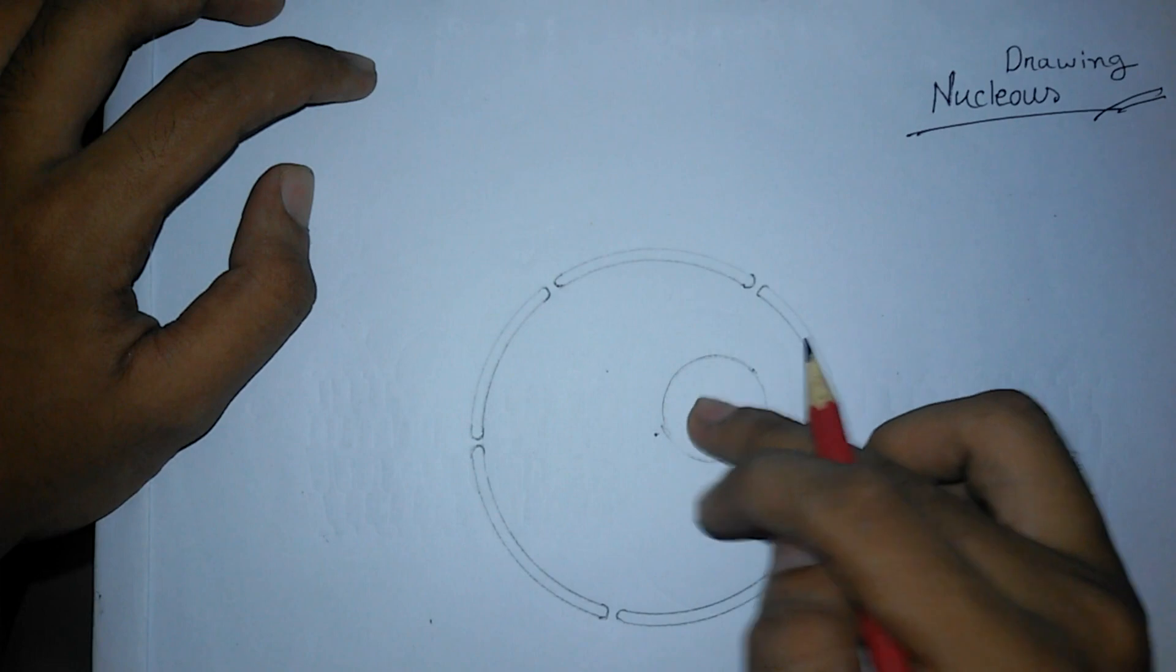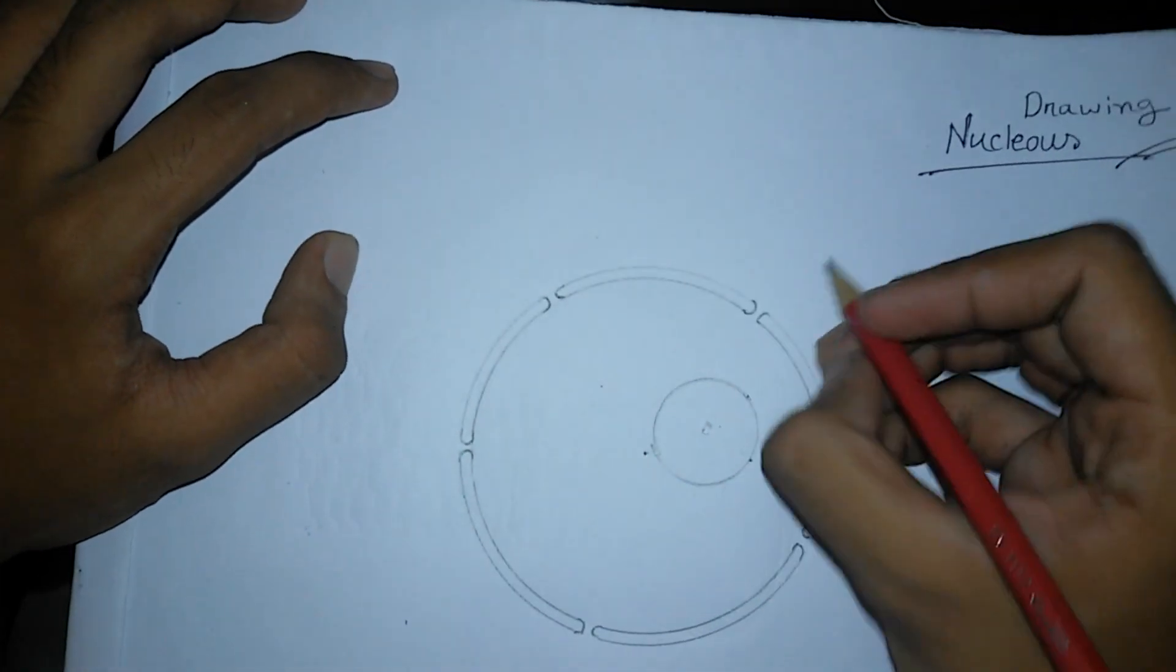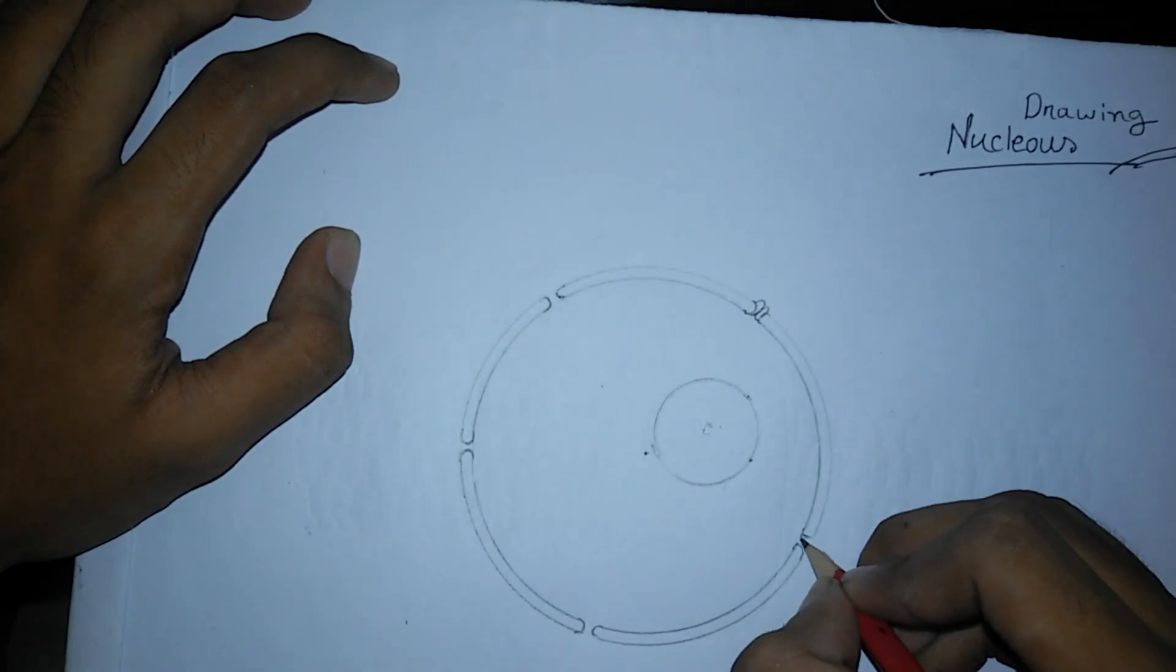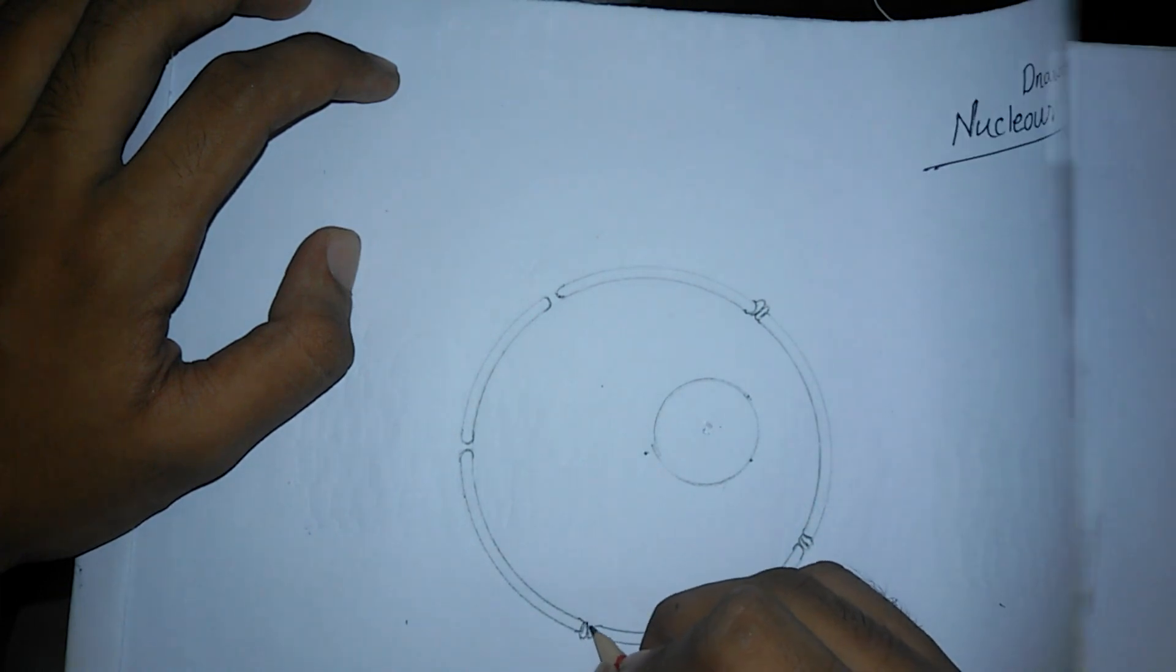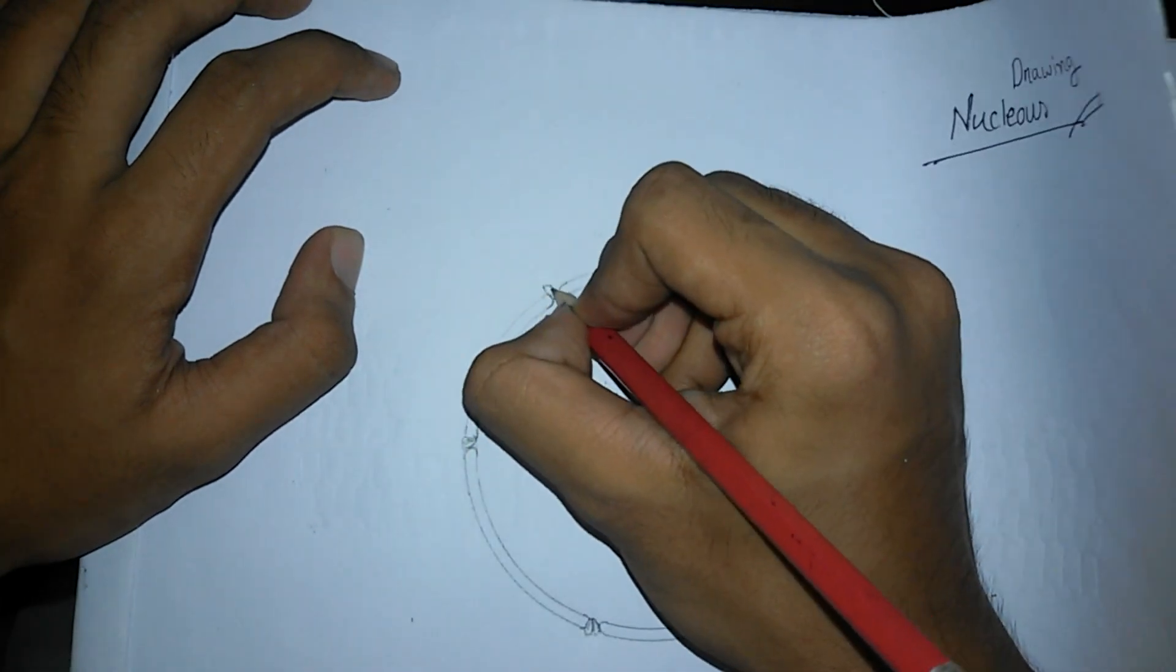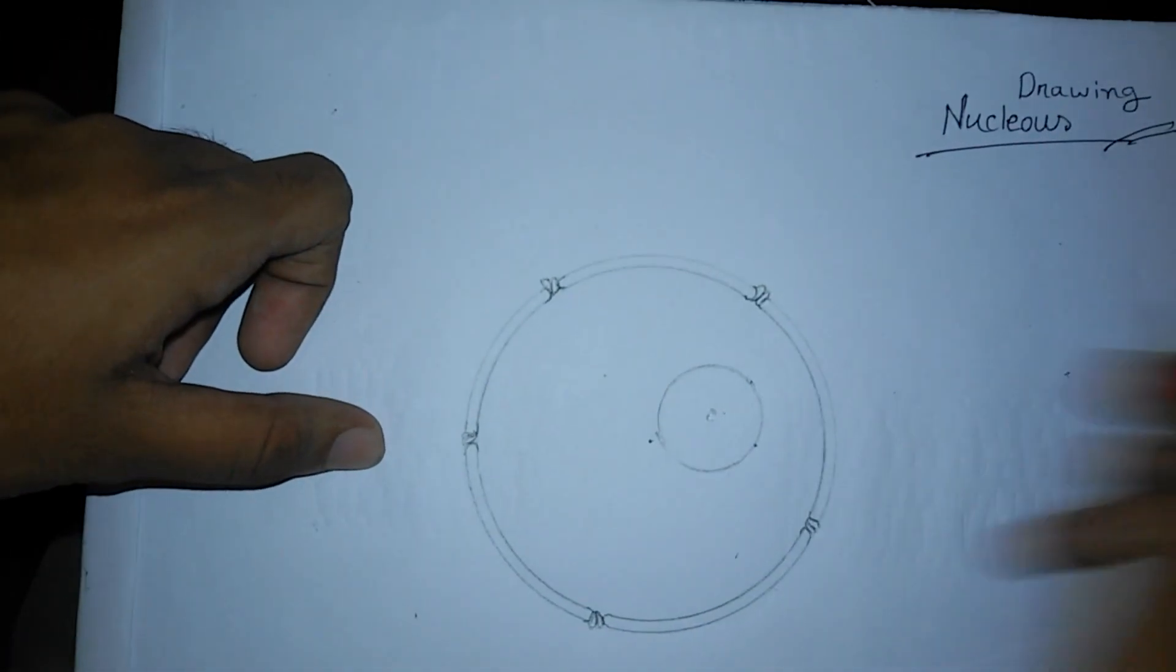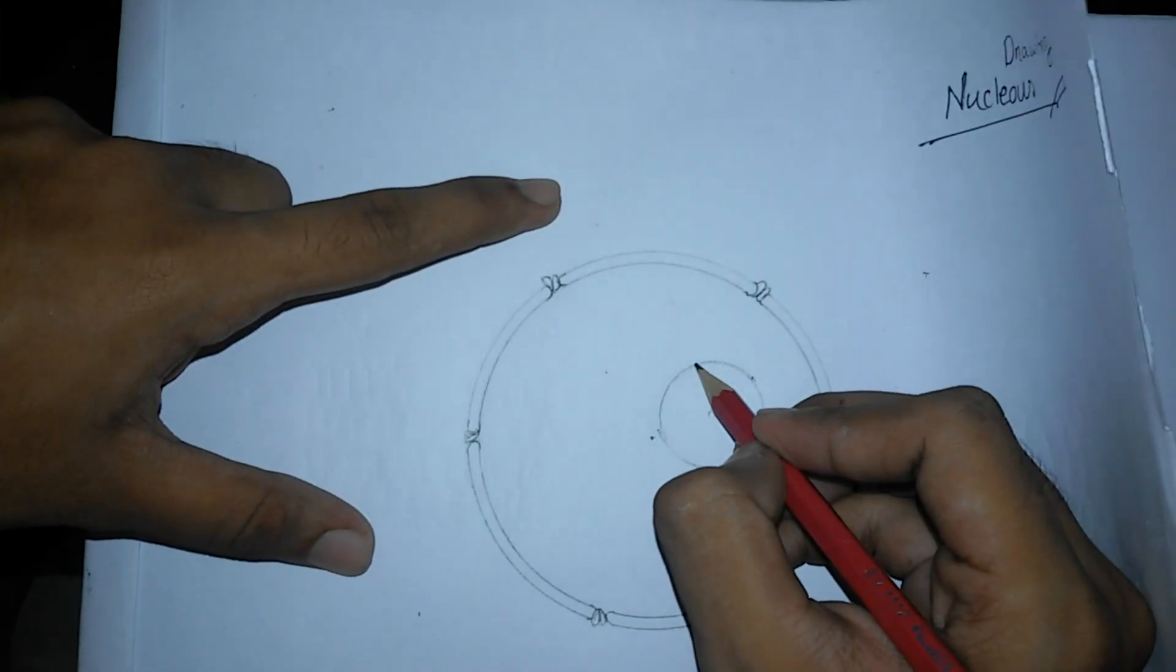Then I need to add the nuclear pores like this. You need to draw some shapes like this. I've given one, two, three, four, and five nuclear pores. This is the nuclear membrane and this is our nucleolus.